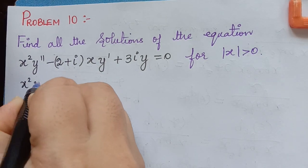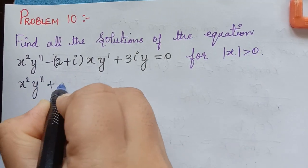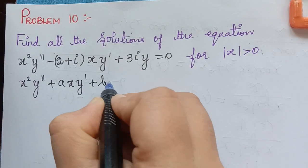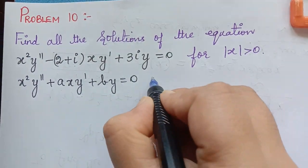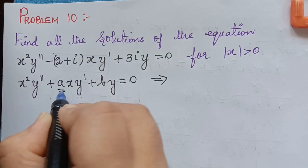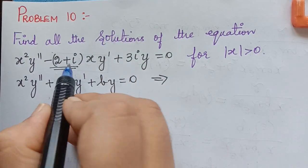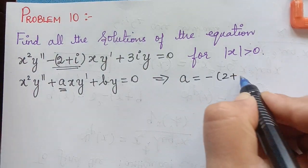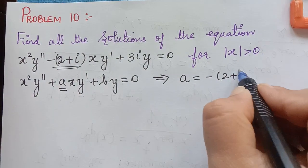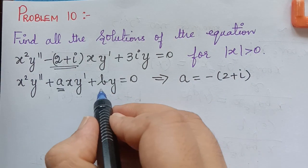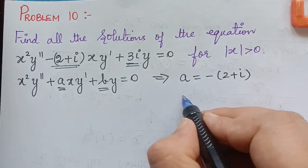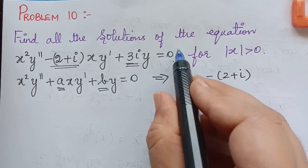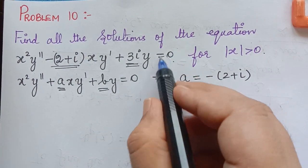Comparing this given equation with Euler's equation, we get that the value of a is equal to negative 2i plus 1, so a equals negative (2 plus i), and the value of b is equal to 3i. This is a homogeneous equation because the right side equals 0.